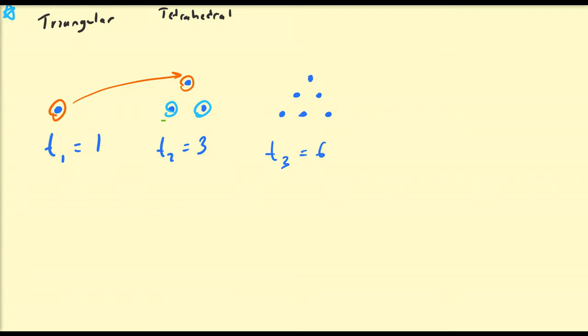These three dots here are the same as those three dots there. And you can find that t4 is going to be equal to 10.